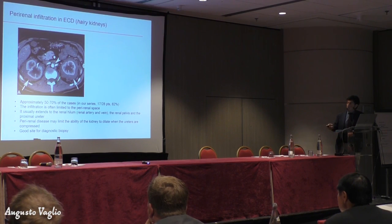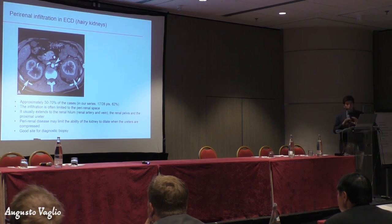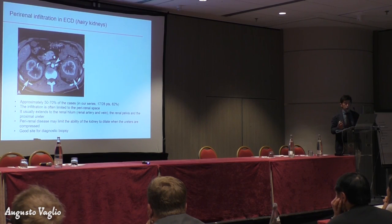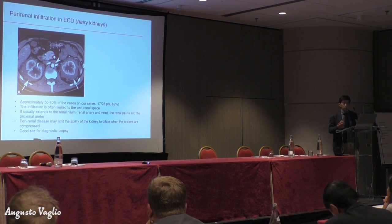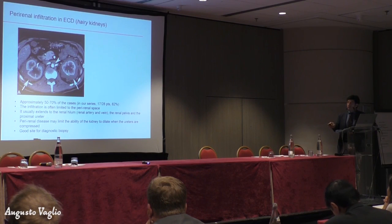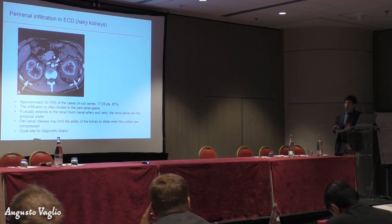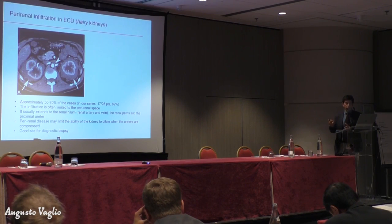The infiltration is often limited to the perirenal space but also extends to the renal hilum — where the renal artery and vein are — the renal pelvis, and the proximal ureter. The presence of this tissue around the kidney may limit the ability of the kidney to dilate when the ureters are compressed, so sometimes we may fail to see hydronephrosis even though the kidney is still obstructed. We also need to remember that this area is a very good site for biopsy — a very easy way to get tissue that is diagnostically very useful.